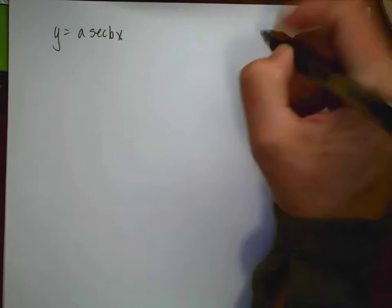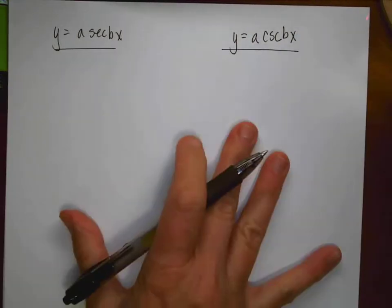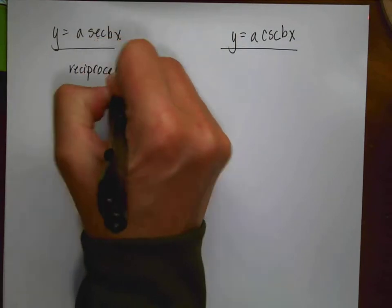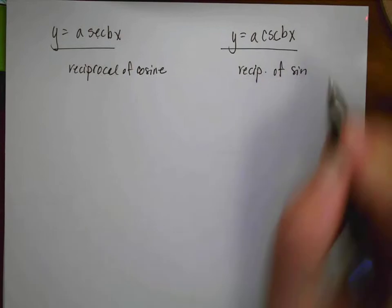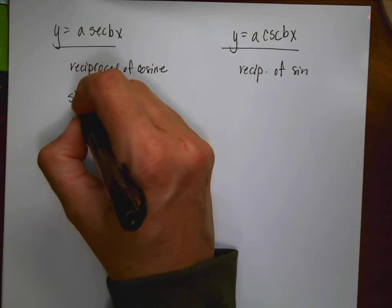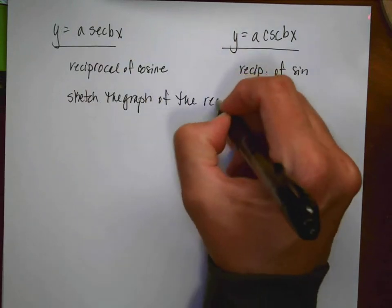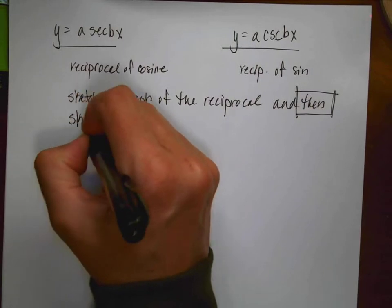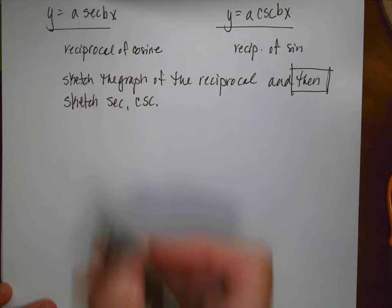Now let's look at y = a·sec(bx) and y = a·csc(bx). These are unique, cool graphs. Remember: secant is the reciprocal of cosine, and cosecant is the reciprocal of sine. When graphing these, we first sketch the graph of the reciprocal function, then superimpose secant or cosecant on top of it.